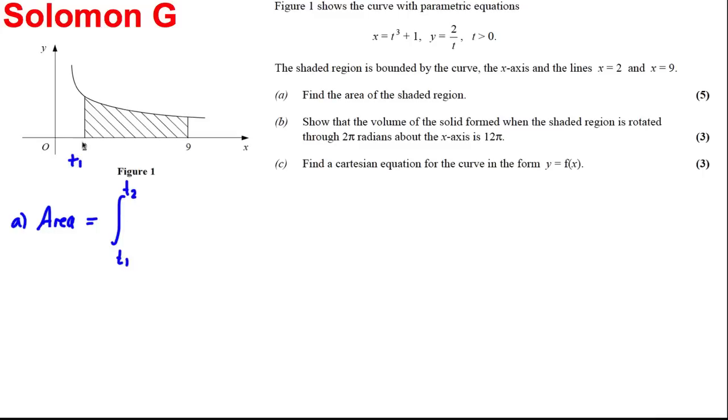the t1 that makes that x possible, and the t2 that makes that x possible, of y in terms of t, dx by dt multiplied by dt, or with respect to t, I should say.